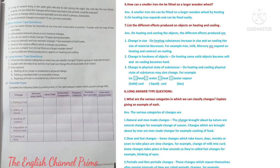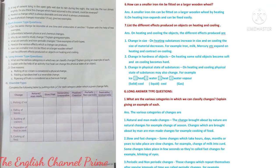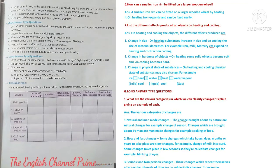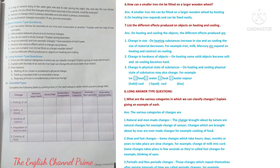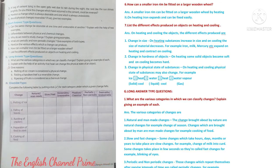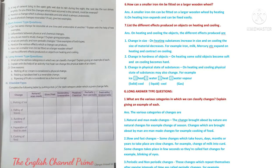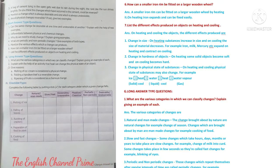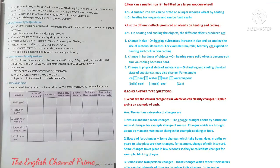Question seven: List the different effects produced on objects on heating and cooling. First, change in size: on heating, substances increase in size; on cooling, the size decreases. For example, iron, milk, mercury expand on heating and contract on cooling. Second, change in hardness: on heating, some solid objects become soft; on cooling, they become hard. Third, change in physical state: for example, ice in solid state, when heated becomes water (liquid); when heated further, it becomes water vapor.